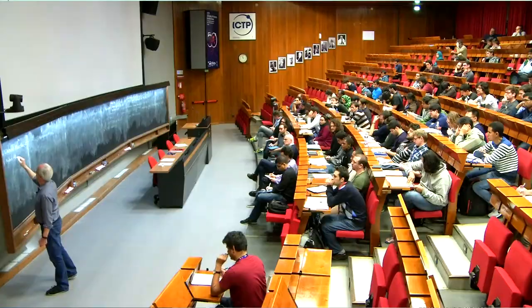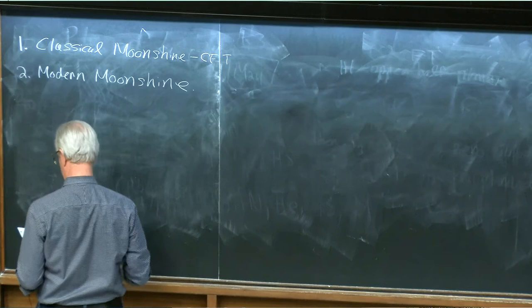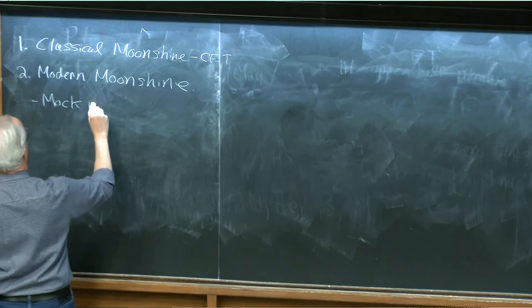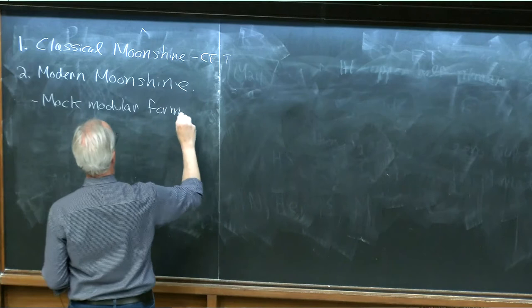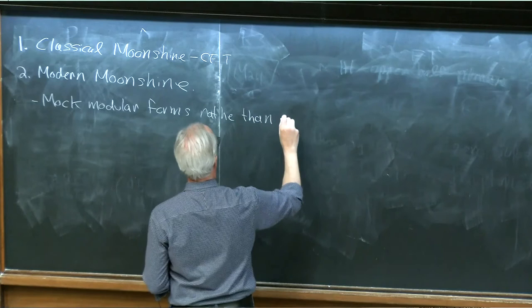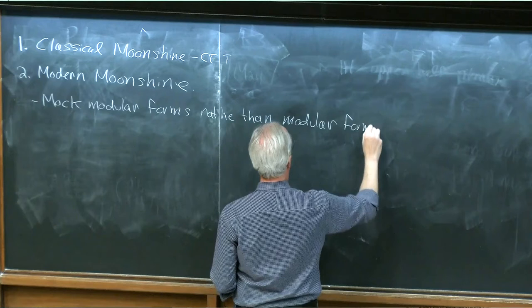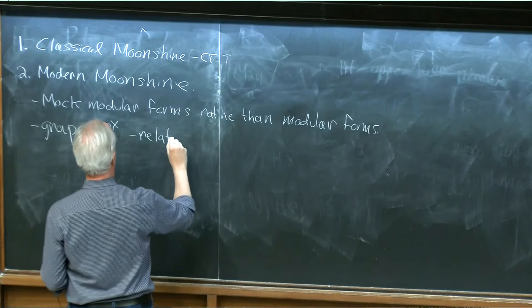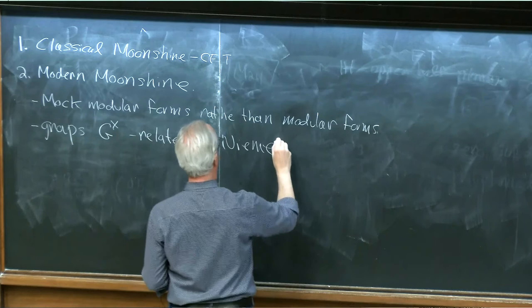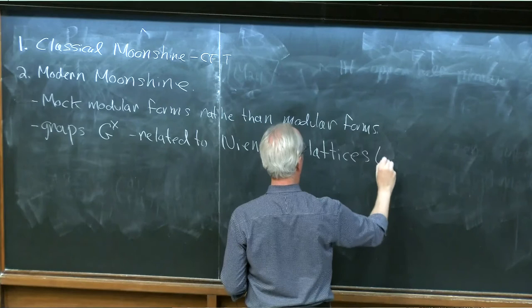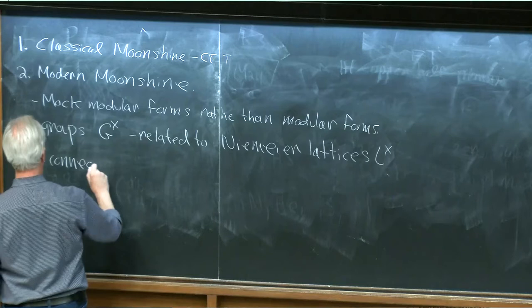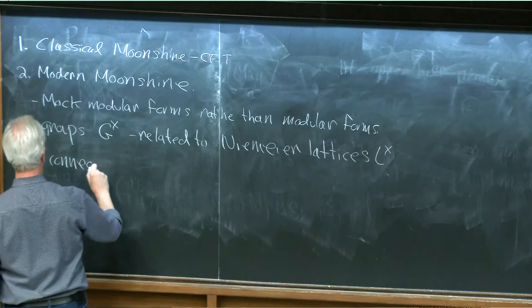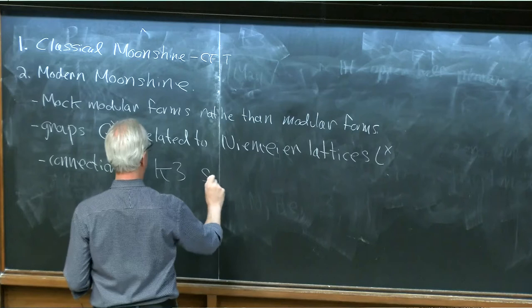But the more modern versions of moonshine involve different structures which are less well understood. In particular, they involve mock modular forms rather than modular forms, and groups which are related to Niemeyer lattices. There is a connection — which I would say is not perfectly understood — to K3 surfaces, and maybe to more general Calabi-Yau manifolds.